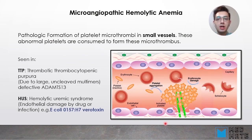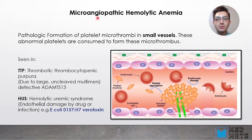Let's move on to the next disorder of primary hemostasis: microangiopathic hemolytic anemia. The disease description is embedded in its name. 'Micro' means small, 'angio' means vessels, so this involves the pathologic formation of platelets in small vessels.